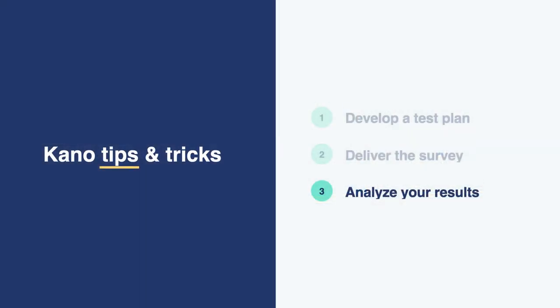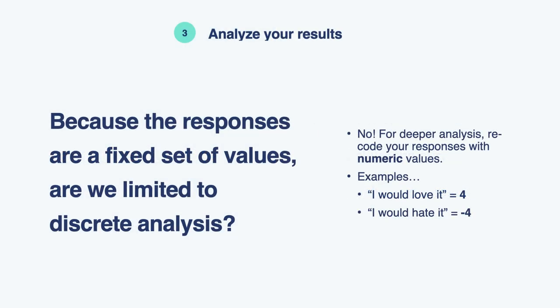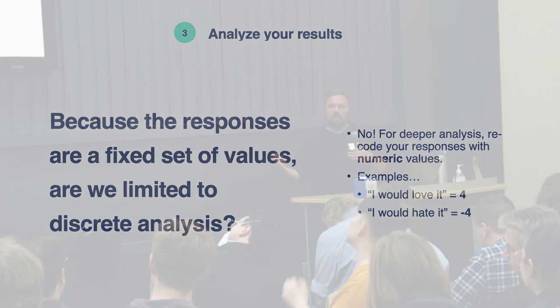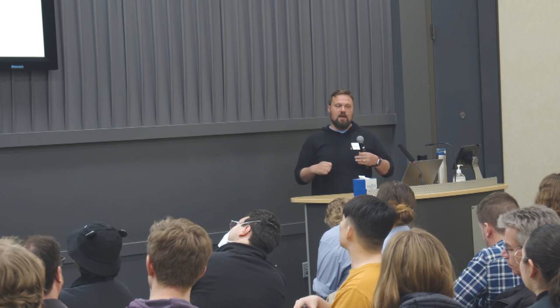How to actually analyze the results: you have text-based responses, so how do you quantify them? You're not limited to just categorical buckets — what we found works best is to recode your response data set with numerical values so you can do a continuous analysis and see responses more on a continuum. For example, recode 'I would love it' to a value of 4 and 'I would hate it' to a value of negative 4, then plot the other responses in between. This gives you more quantitative tools to analyze the data.